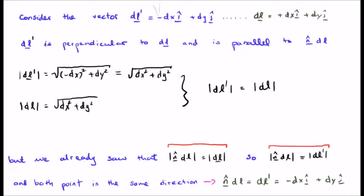Therefore, N hat DL is equal to the magnitude of DL prime. And both of them point in the same direction, perpendicular to DL.